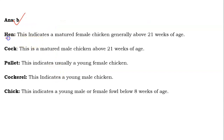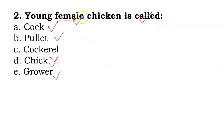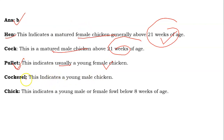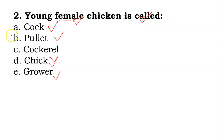Here is the explanation. Hen indicates a mature female chicken, generally about 21 weeks of age. Cock is a mature male, also about 21 weeks of age. Pullet indicates a young female chicken — that was the question. Young female chicken is also known as Pullet. Cockerel indicates a young male chicken, the opposite of Pullet. Chick indicates a young male or female fowl below eight weeks of age. So the young female chicken is known as Pullet, and the young male chicken is known as Cockerel. Answer is B.